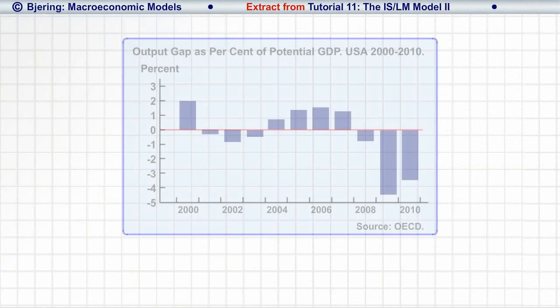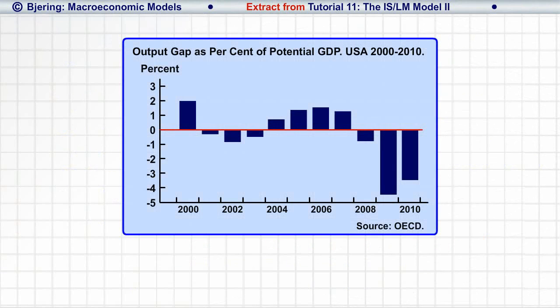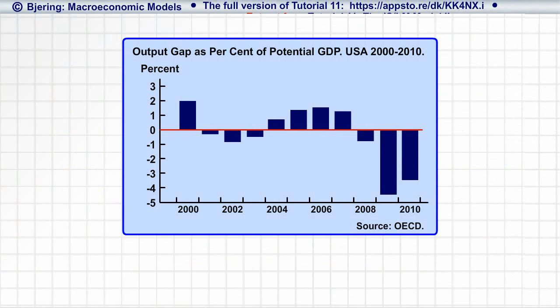In the short term, GDP fluctuates around potential GDP, generating positive or negative output gaps, and unemployment different from structural unemployment.